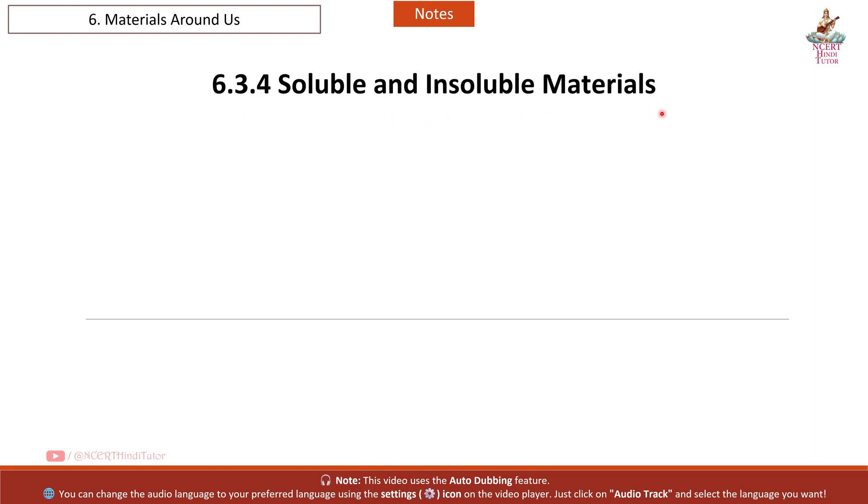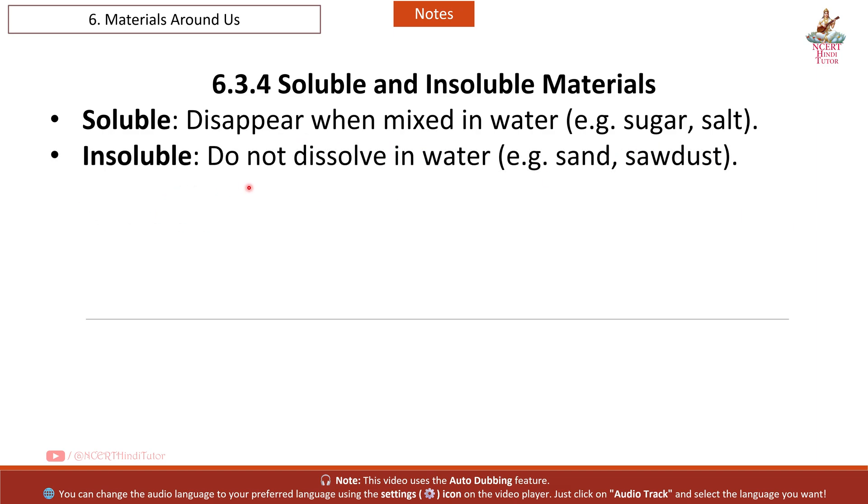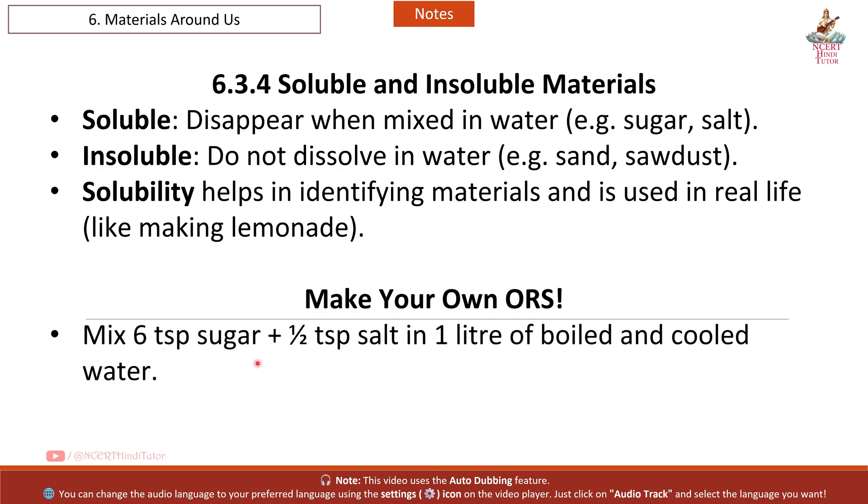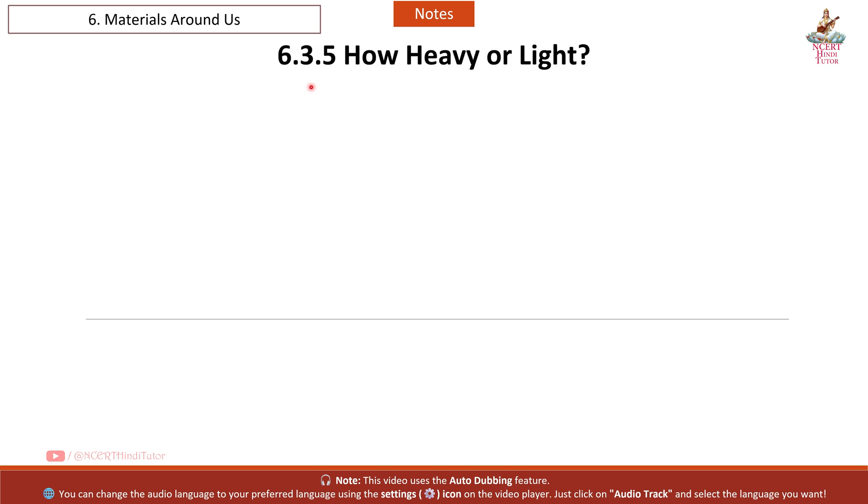6.3.4 Soluble and Insoluble Materials. Soluble: disappear when mixed in water. Example: sugar, salt. Insoluble: do not dissolve in water. Example: sand, sawdust. Solubility helps in identifying materials and is used in real life like making lemonade. Make your own ORS: mix 6 teaspoons sugar plus half teaspoon salt in 1 liter of boiled and cooled water. ORS helps in treating dehydration.